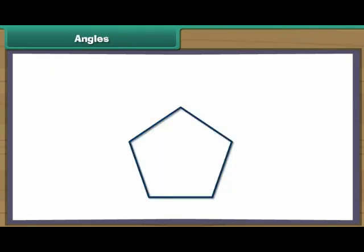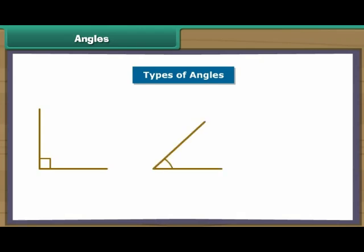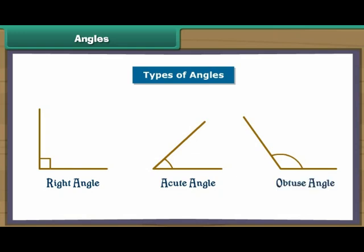Any two adjacent sides of a polygon form an angle between them. An angle is the space between two lines, line segments or rays that move away from one another from a common point. The measure of an angle is specified in degrees. Let us take a look at three types of angles: right angle, acute angle, and obtuse angle. Now we will learn them one by one in detail.